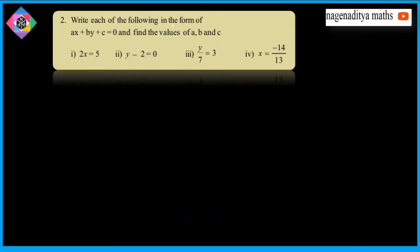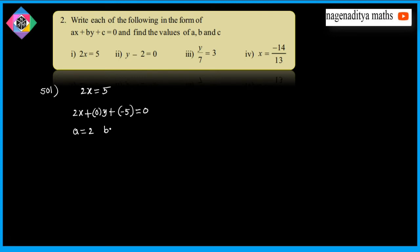Next: write each of the following in the form ax plus by plus c is equal to 0 and find the values of a, b, and c. First one: 2x is equal to 5. This gives 2x plus 0 times y plus (minus 5) is equal to 0. Comparing, a is equal to 2, b is equal to 0, and c is equal to minus 5.